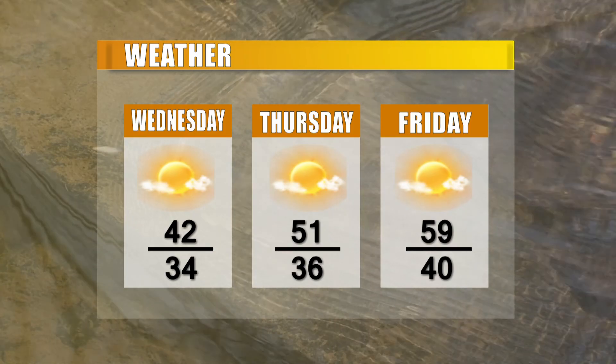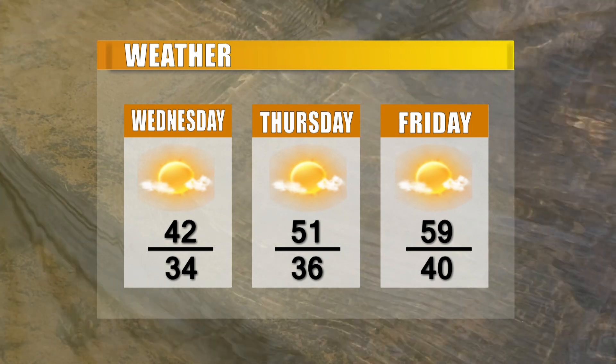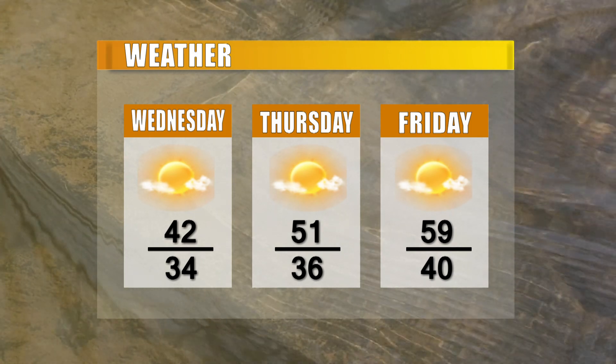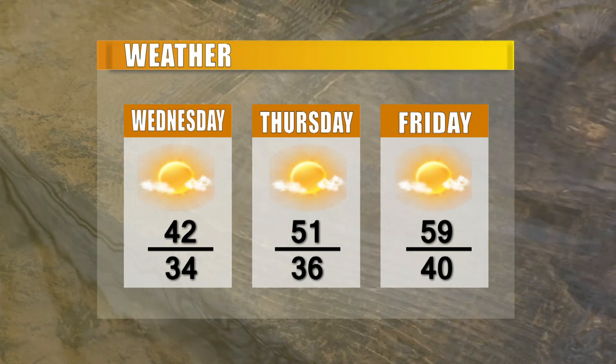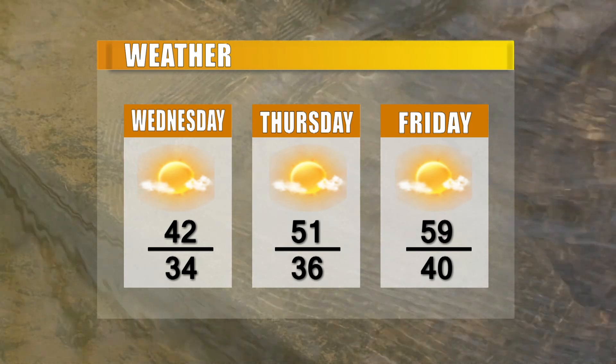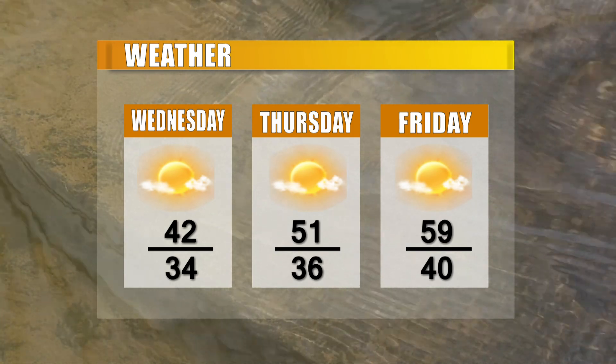Let's get a quick check on our three-day weather forecast tonight. Cloudy with a chance of rain with a low around 37. Wednesday, mostly cloudy with a low around 39. Thursday, partly sunny with a high near 51. Friday, mostly sunny with a high near 59.